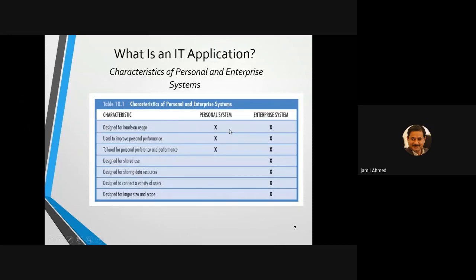In the summary table: hands-on usage is available in both personal and enterprise systems; used to improve performance — available in both; tailored performance — available in both. However, designed for shared use is not available in the personal system — that is a characteristic unique to the enterprise system. Designed for sharing detailed resources, connecting variety of users, and designed for size and scope are the four characteristics uniquely related to enterprise systems.